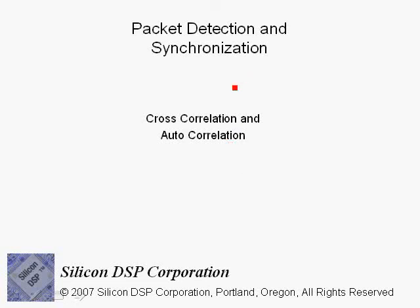Packet detection and synchronization is a very important topic in OFDM. Cross-correlation and auto-correlation will be covered in this section. We will discuss where cross-correlation can be used, especially in coarse timing and fine timing, and auto-correlation — in particular for 802.11a — is used in packet detection and also coarse frequency offset estimation.